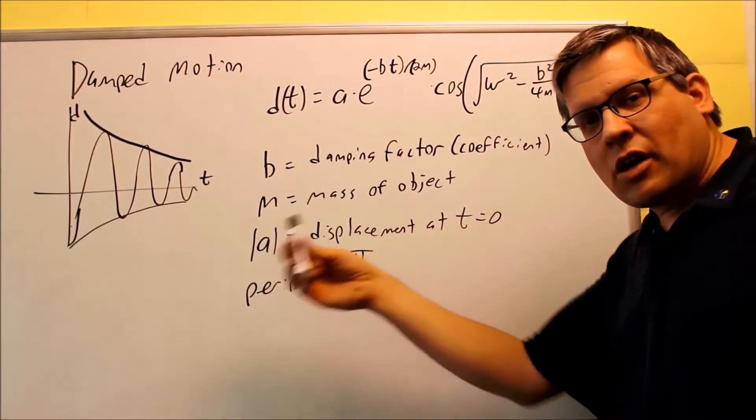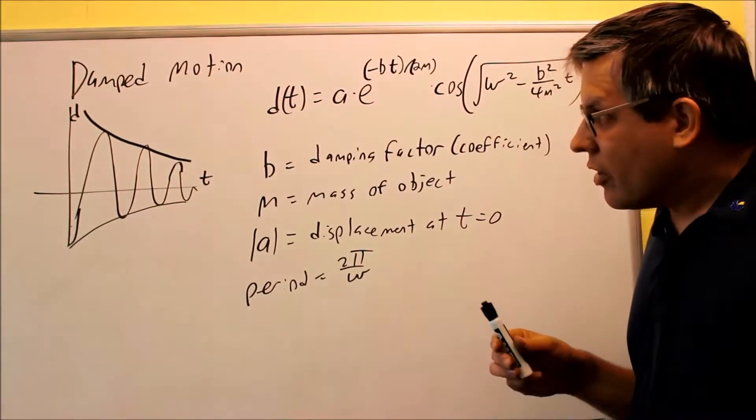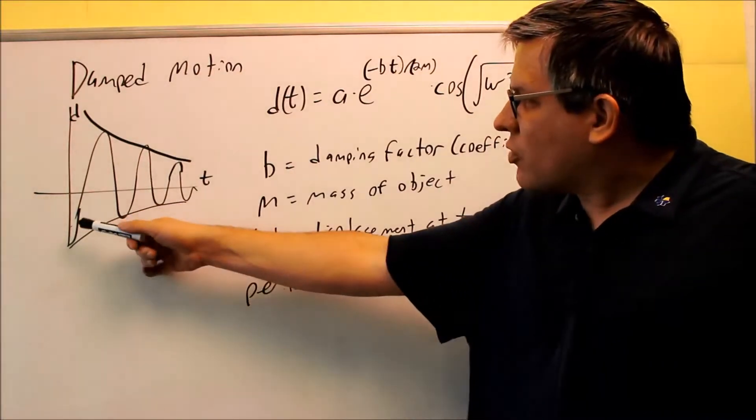Or if you have a pendulum swinging back and forth, that's eventually going to stop as well because we've got air resistance and friction at play there. So this is really what happens with damped motion.